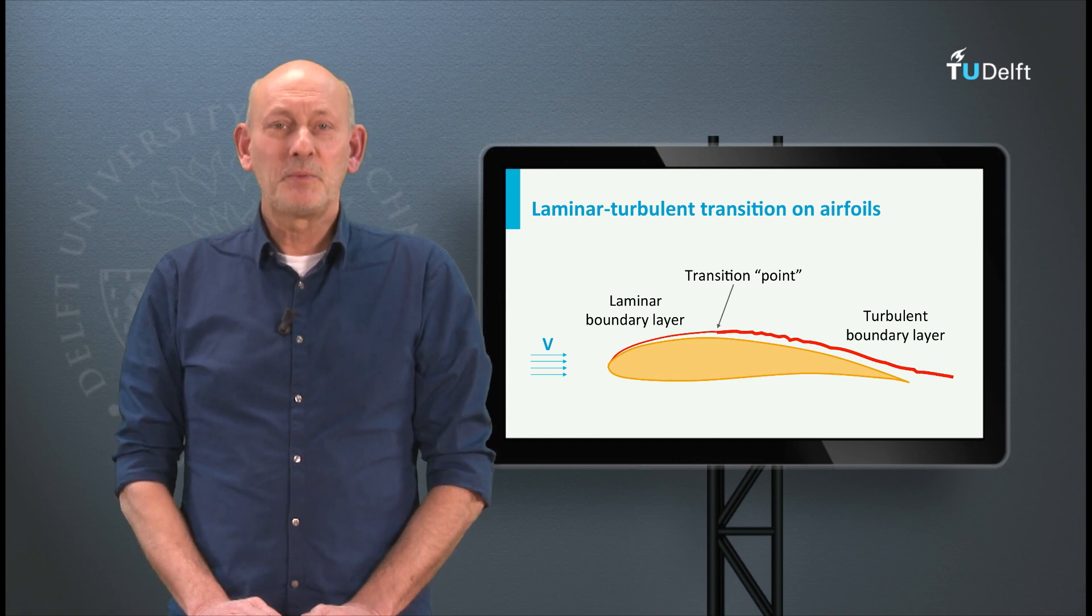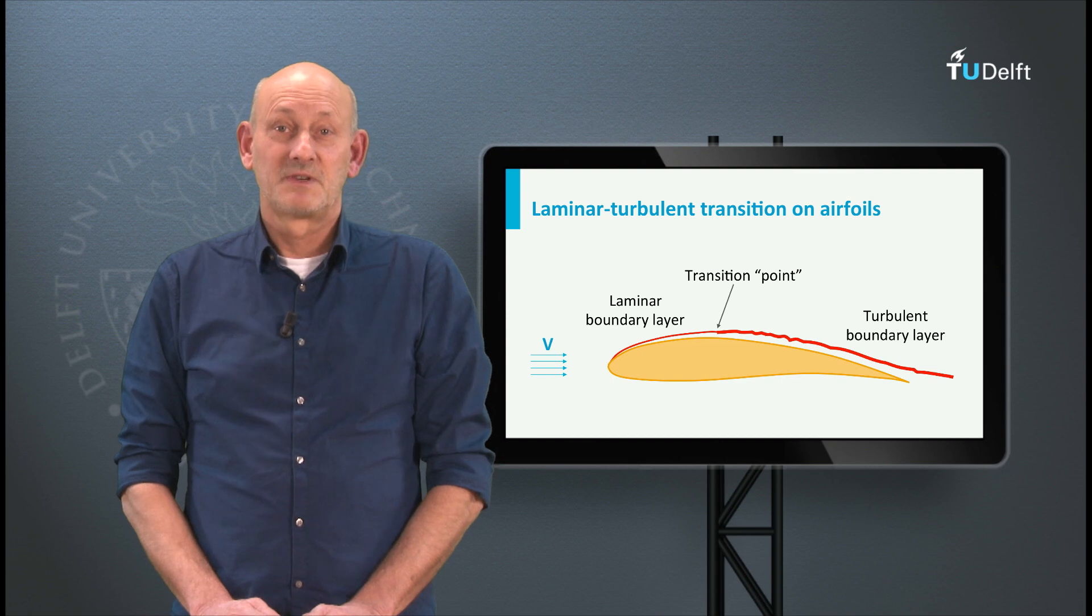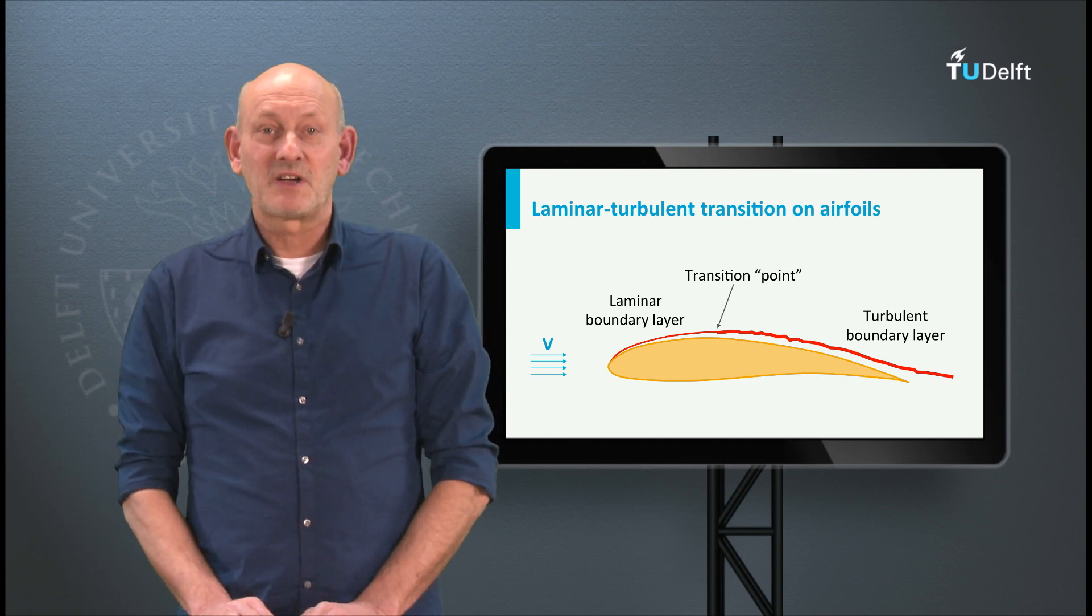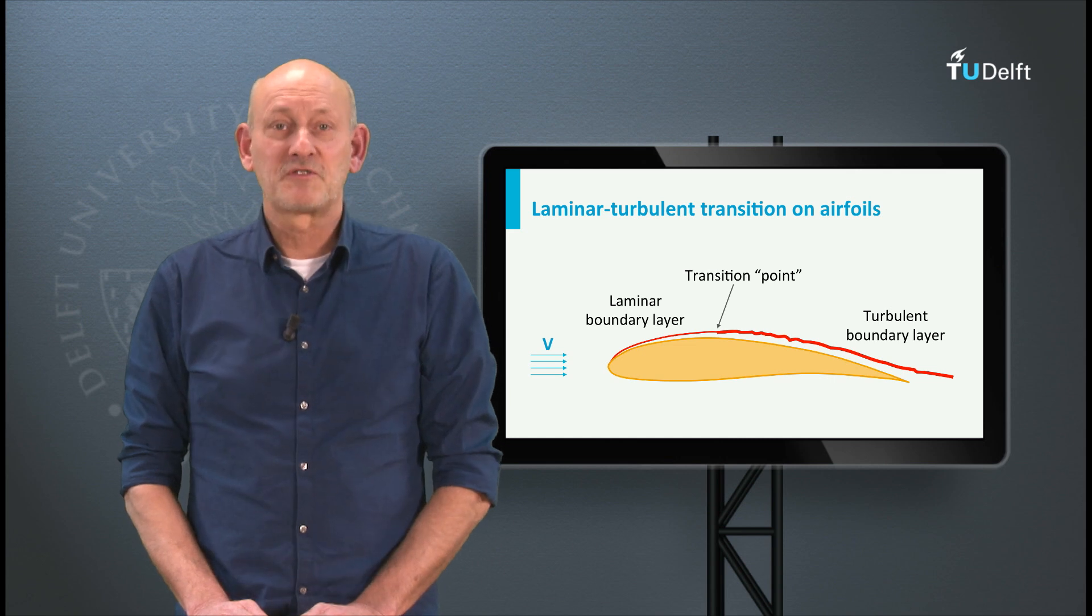Through the boundary layer, perpendicular to the airfoil surface, the pressure remains constant. This is very convenient, because when we can measure the pressure at the airfoil surface, we also have the pressures in the outer flow, which is not affected by friction.